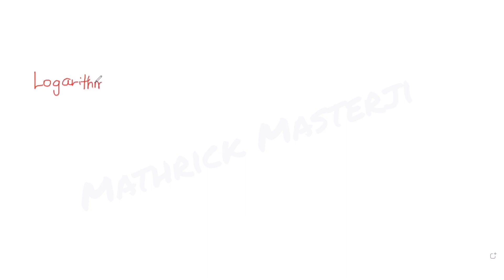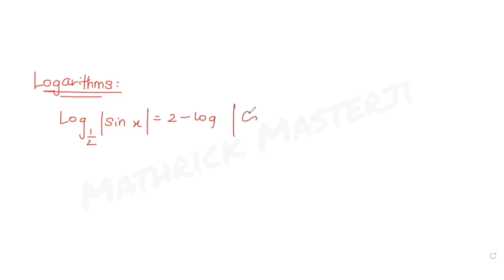Today's question is taken from the topic of logarithms. The question asks us to find how many distinct solutions exist for the equation: log of |sin x| to the base 1/2 equals 2 minus log of |cos x| to the base 1/2, in the interval from 0 to 2π.